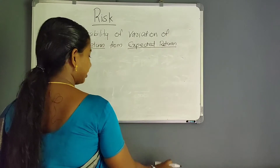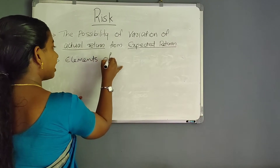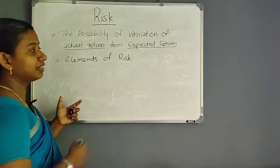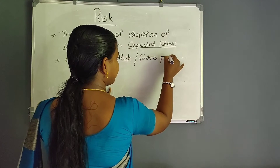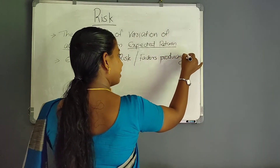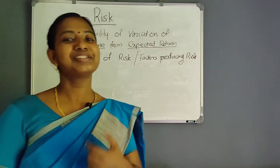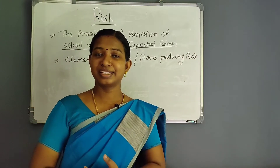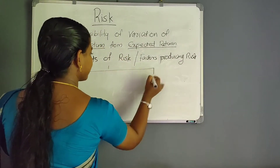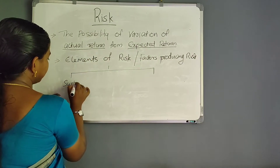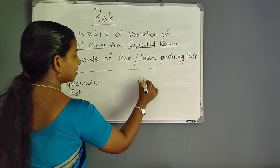Elements of risk — the main item is risk. There are two components, or factors producing risk. There are two components of risk: systematic risk and unsystematic risk.